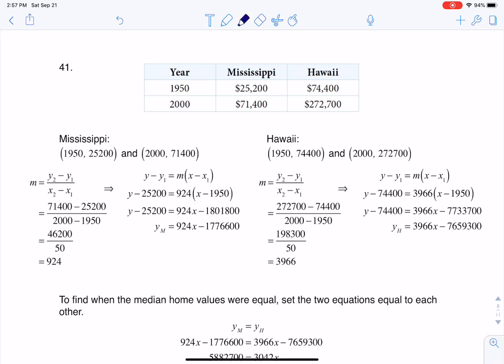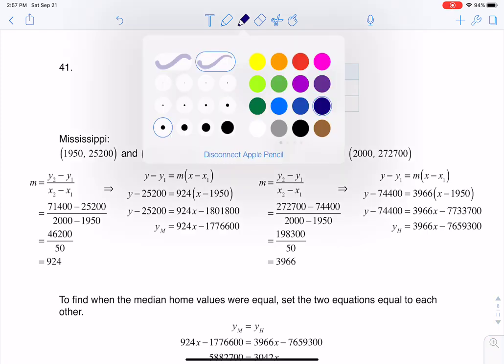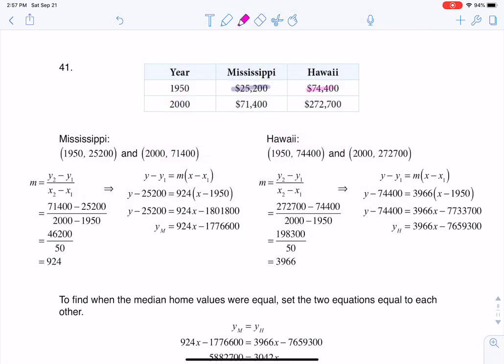We've got Mississippi started in 1950 house prices, or the median house price, which means the middle house price, was $25,200. And then for Hawaii, it was $74,000. So even back in 1950, it looks like house prices were higher for Hawaii than Mississippi, and that continued in 2000. You can see Hawaii increased by a good chunk to almost $273,000.